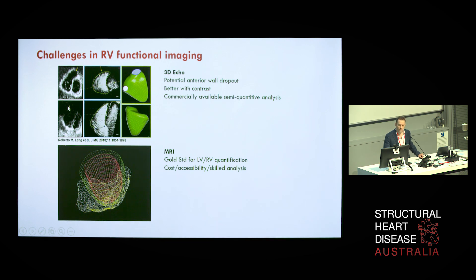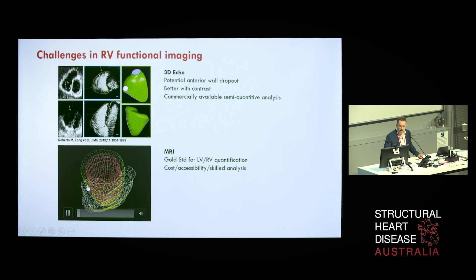3D echocardiography has allowed for better bedside assessment of the right ventricle, but when there is free wall dropout — which can be overcome with echocontrast — there are some limits to assessing the RV in totality, and commercially available semi-quantitative software isn't routinely used in all laboratories. With regards to MRI, its strength is that you can assess the base of the heart and its complex triangular or tubular structure around the anterior aspect very accurately, though this really requires skilled and careful analysis.